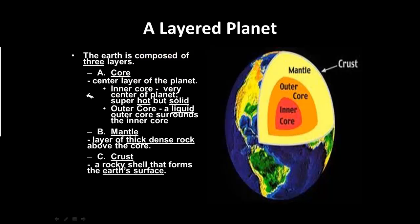The Earth is composed of three different layers. The core is the central layer of the planet. The inner core is the very center — super hot, but solid. The outer core is a liquid that surrounds the inner core. The mantle is a layer of thick, dense rock right above the core. And the crust, where we live, is the rocky shell that forms the Earth's surface.